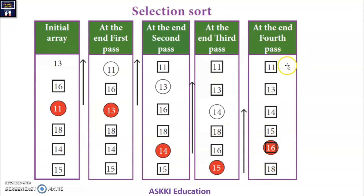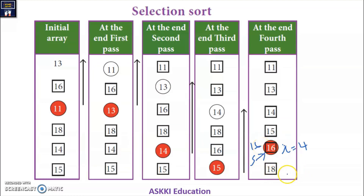At the end of the 4th pass, 4 elements have been sorted in their positions. Now the 5th pass: I is equal to 4. S denotes 16 as the smallest element. Comparing 16 and 18: 16 is smaller, so it remains the same. We have come to the end of the list.